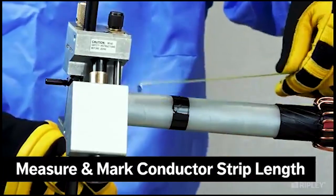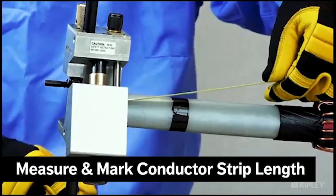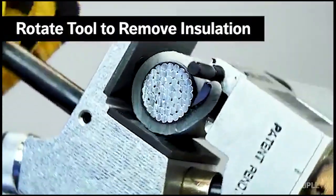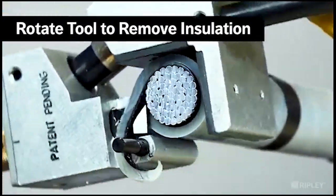Measure and mark the intended conductor length. Rotate the tool around the insulation layer until reaching the mark.